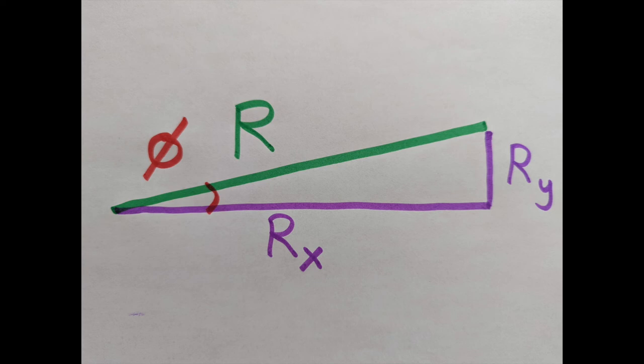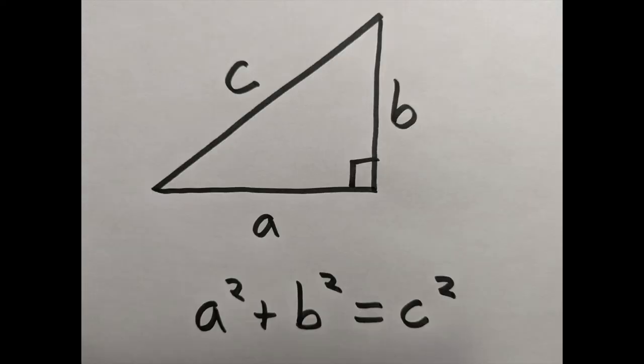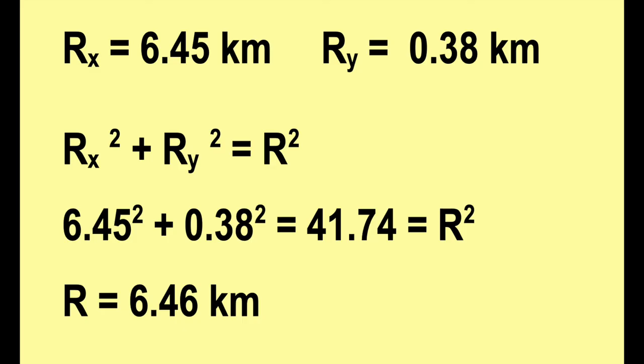To find R, the hypotenuse, we're going to use the Pythagorean theorem, which says for right triangles that a squared plus b squared equals c squared. And since we know a and b, we can solve for c. When we do that, we get the final magnitude, the final distance, 6.46 kilometers.